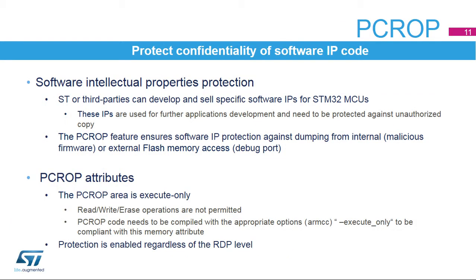PCROP means proprietary code readout protection. Third parties may develop and sell specific software IPs for STM32 microcontrollers, and original equipment manufacturers may use them when developing their own application code. In order to protect the software intellectual property, the code must not be copied or read. PCROP's purpose is to protect the confidentiality of third-party software IP against malicious users, independent of the RDP level setting. The protected firmware can only be executed by the Cortex-M4 core. Any other access — like DMA, debug, data read, write, and erase — is strictly prohibited.